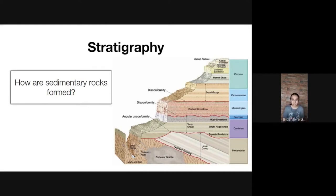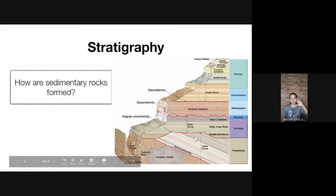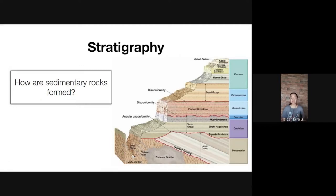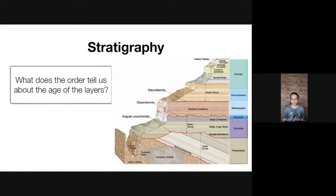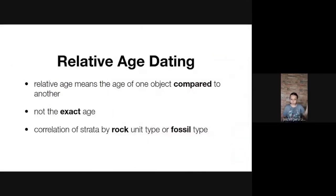Rocks undergo weathering, erosion, transport, and deposition, eventually clumping together and forming different layers. The Grand Canyon's different layers were subjected to those processes and more — including faulting and earthquakes that cause changes to rock formations. The order of the layers can tell us about their age: older layers at the bottom, younger ones at the top.